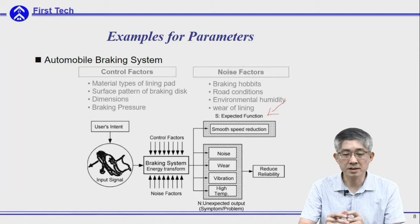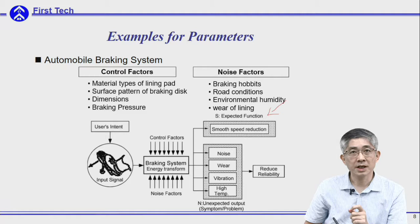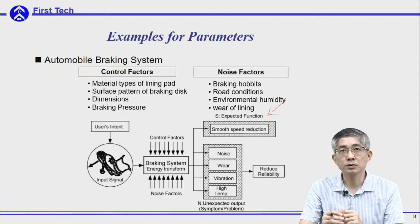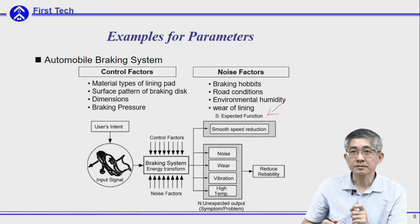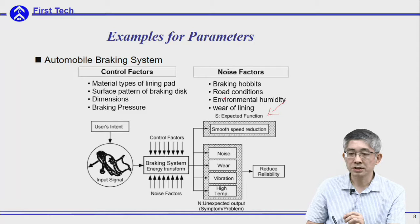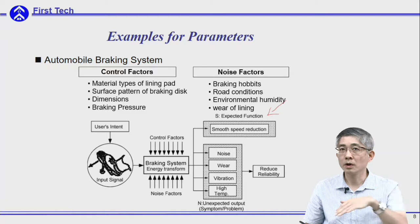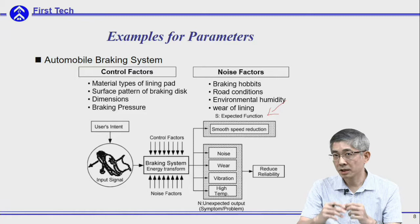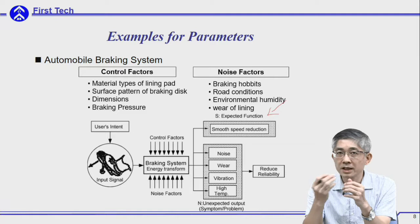There are some control parameters in the braking system, such as the material of the lining pad and the surface design of the braking disc. These factors affect the braking distance and can be specified by the designers — so we call them control factors. There are also some noise factors, such as road conditions: it can be a very smooth road or a sandy road. The environment also affects braking distance, such as whether it is raining or wet. The condition of your lining pad — brand new versus worn — will also give different braking distances. These are all noise factors that cannot be controlled by the designer.